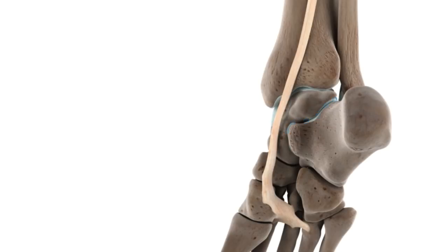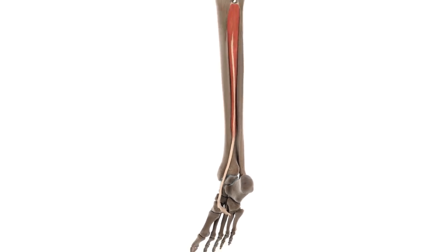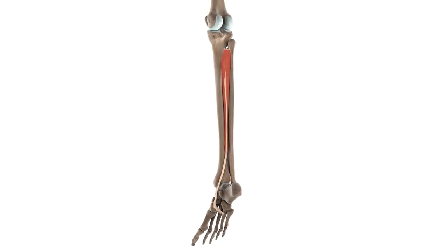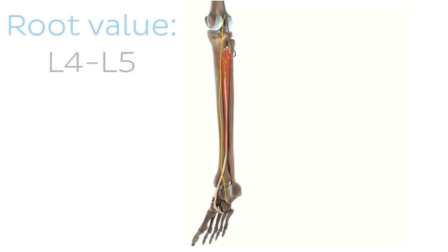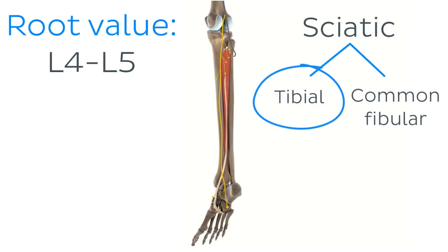It's worth mentioning that the tibialis posterior also works on several other small joints located between the tarsal bones of the foot, which are known as the intertarsal joints. Like all muscles, the tibialis posterior needs some innervation to tell it how to behave. Our nerve of interest is the tibial nerve, which is derived from the L4 and L5 roots of the lumbar plexus. The tibial nerve is the larger of the two main branches of the sciatic nerve.